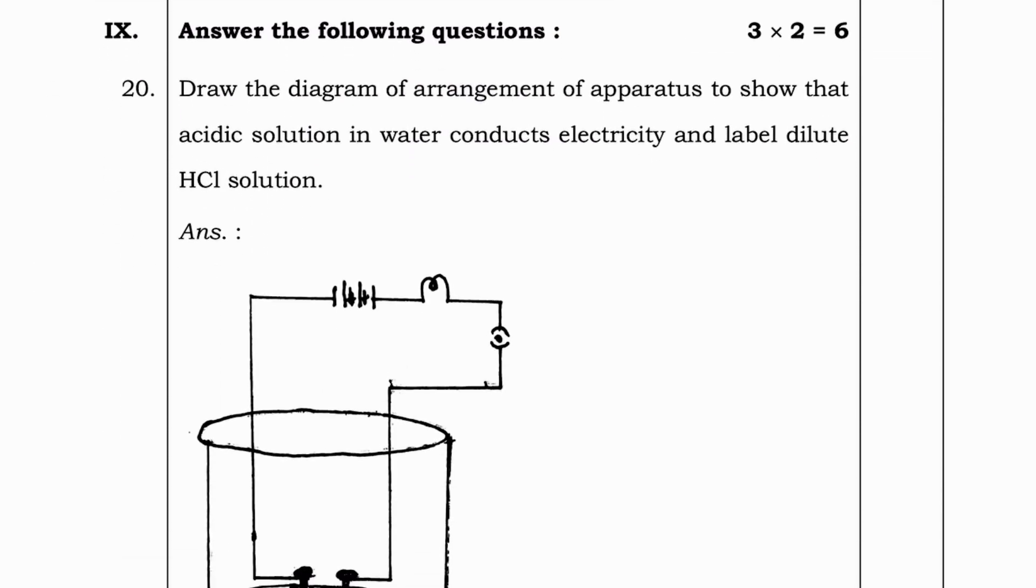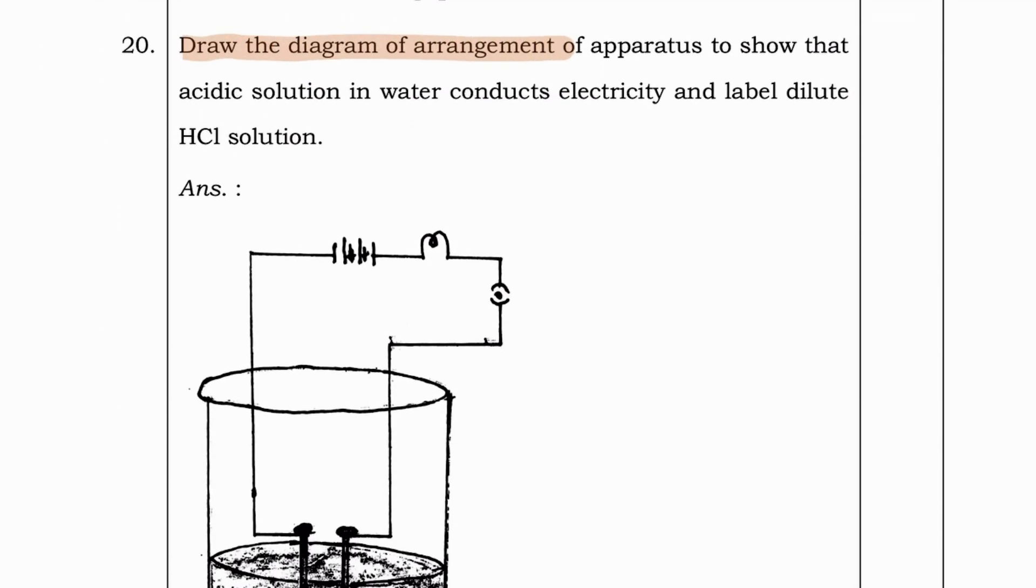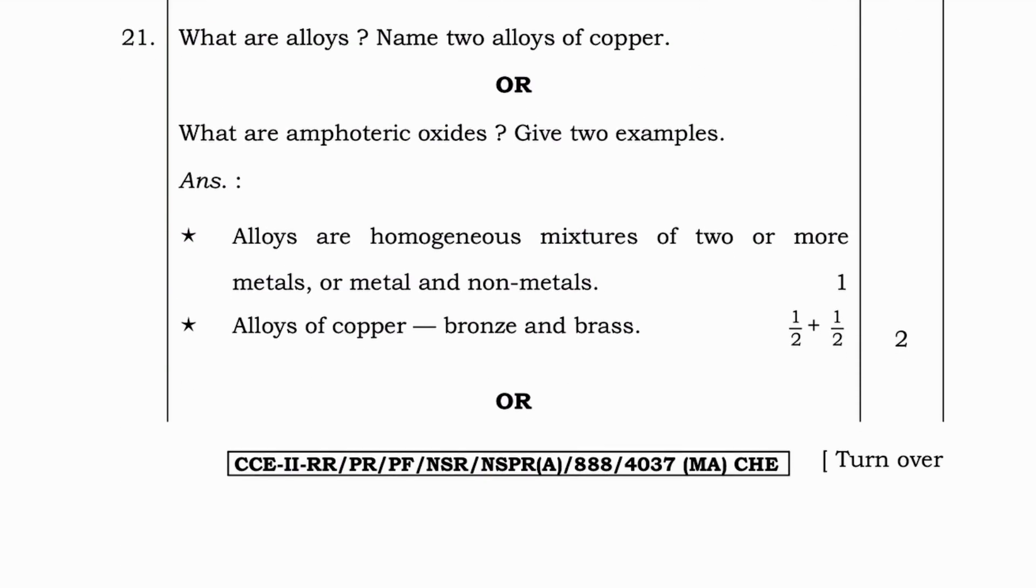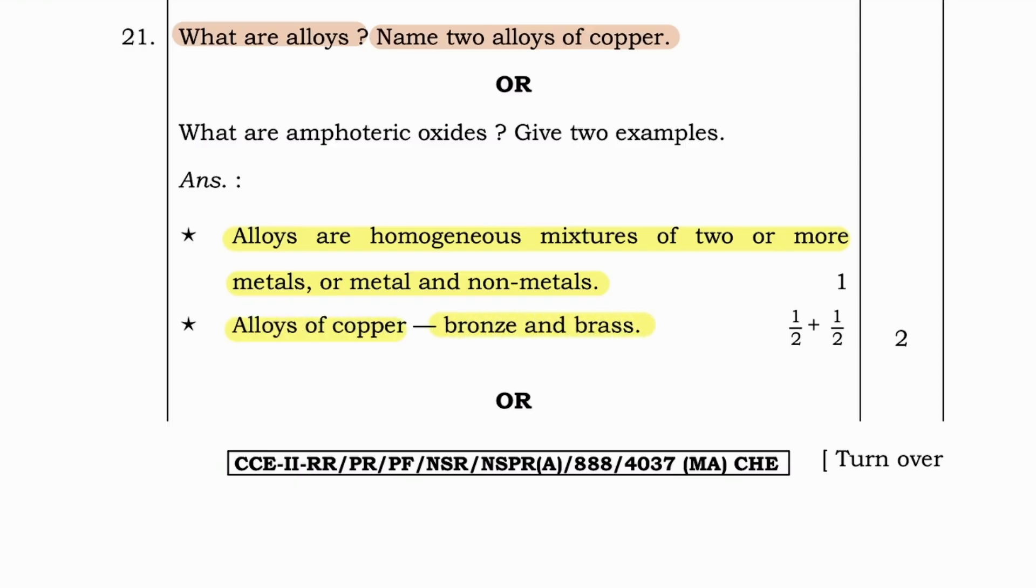Let's go to next question. Draw the diagram of arrangement of apparatus to show that acidic solution in water conducts electricity and label dilute HCL solution. This is the diagram and this is dilute HCL solution they have labeled. Next, what are alloys? Name any two alloys of copper. Alloys are homogeneous mixtures of two or more metals or metal and non-metals. Alloys of copper are bronze and brass.